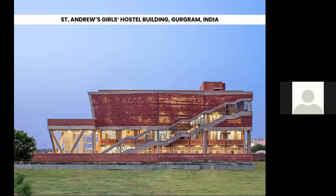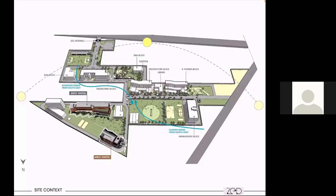One such example of a close-to-net-zero building is our own project: St. Andrew's hostel building in Gurgaon. The master plan clearly shows that on the north zone in the triangular section, we have the residential portion of the campus, and on the southern part, we have the academy blocks. The buildings were given to us as linear in the master plan and they were oriented north-south.